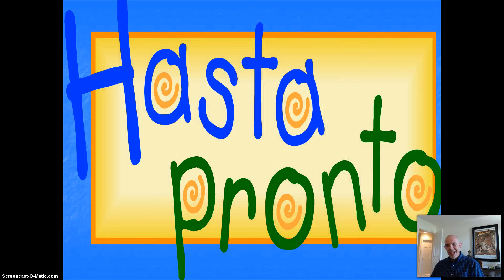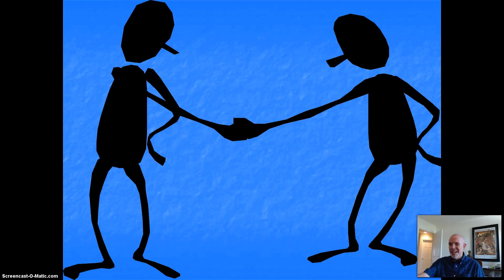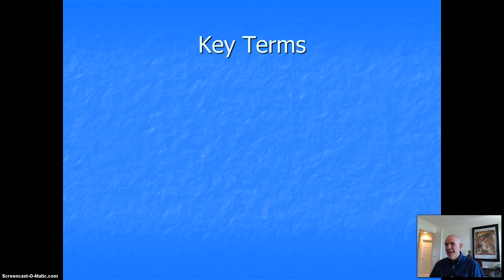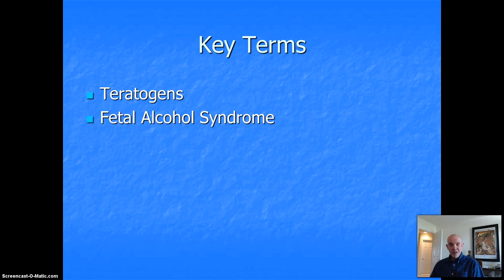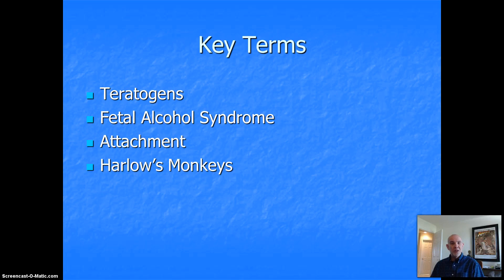And this was to be the end of part two. To finish up, now we start on part three. This is a short section. The key terms here are teratogens, fetal alcohol syndrome, attachment, and Harlow's monkeys.